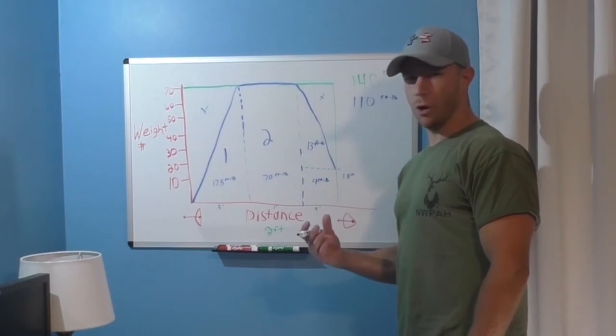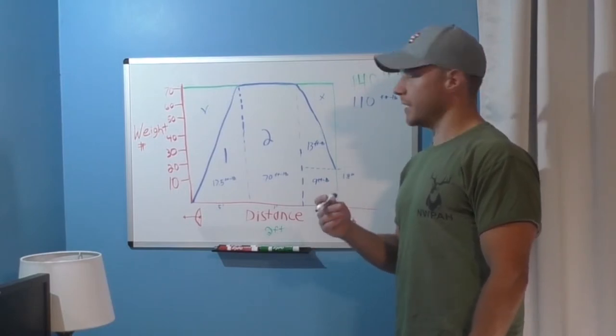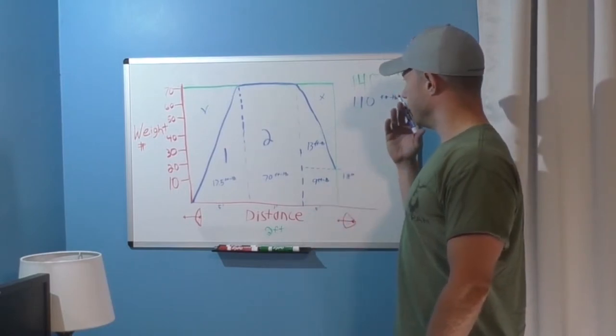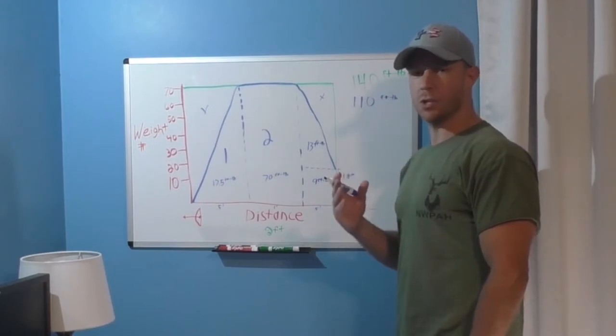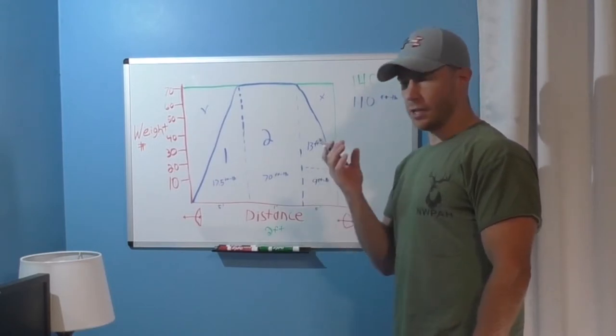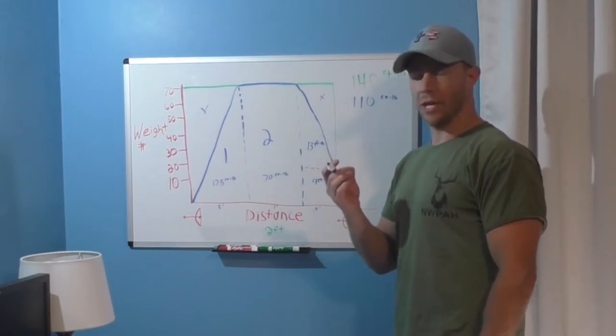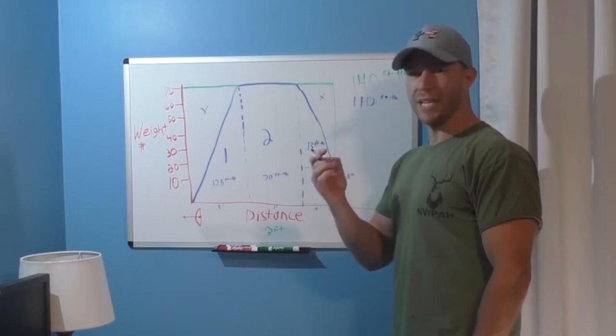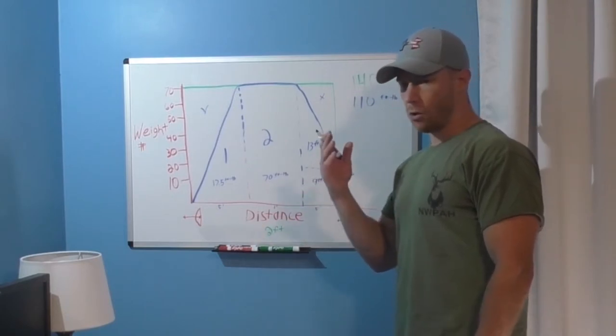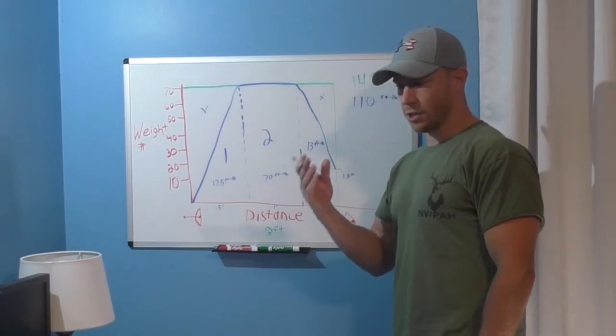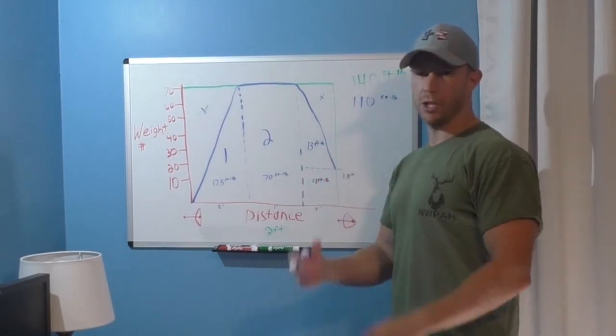So a heavier arrow may be able to harness a bit more of this energy that's stored in the limbs. Now that's only because it'll stay in contact with that string for just a split second longer and allow a little bit more of that energy to transfer to the arrow instead of the vibration of the limbs.